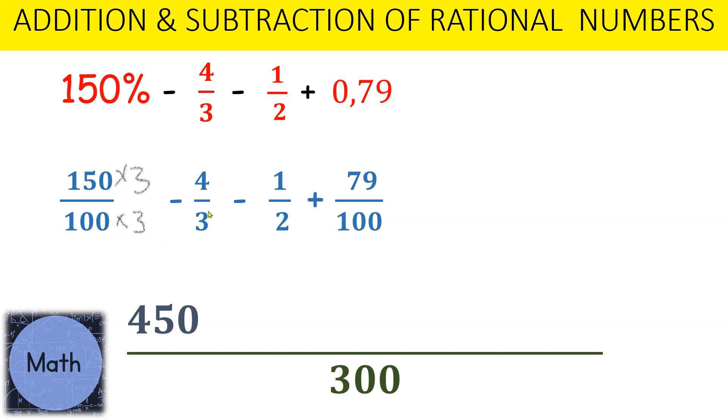For the next fraction, we have 4 over 3. To convert 3 to 300, we're going to multiply by 100, so therefore 4 multiply by 100 means our numerator will be 400.